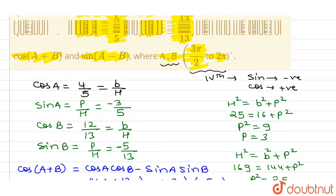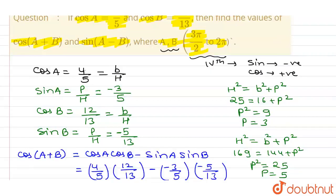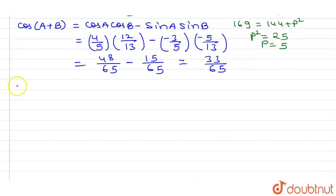Similarly, I have to find sin(A-B), so here we have to find the value of sin(A-B), so I can write here sin(A-B) equals sin A cos B minus cos A sin B.